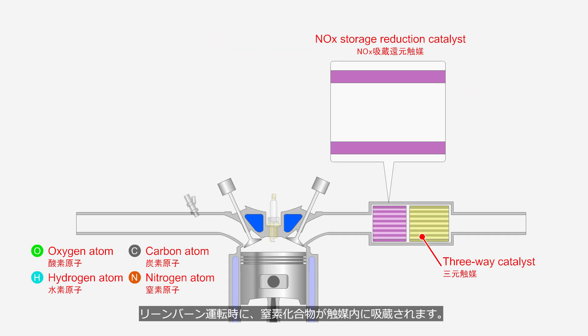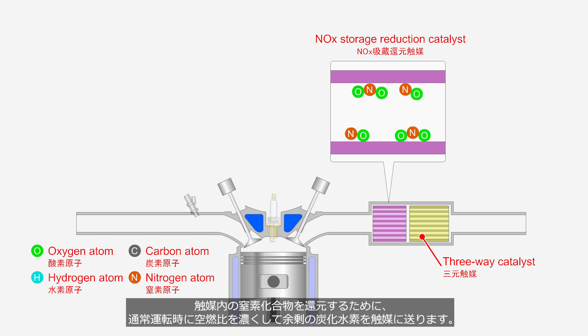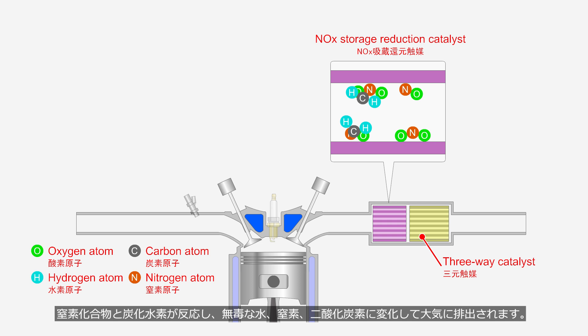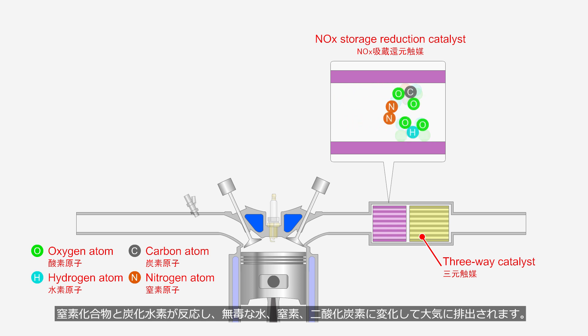During lean burn operation, nitrogen compounds are stored in the catalyst. To reduce nitrogen compounds in the catalyst, the engine control unit enriches the air-fuel ratio during normal operation to supply excess hydrocarbons to the catalyst. The nitrogen compounds and hydrocarbons react, transforming into harmless water, nitrogen, and carbon dioxide, which are then released into the atmosphere.